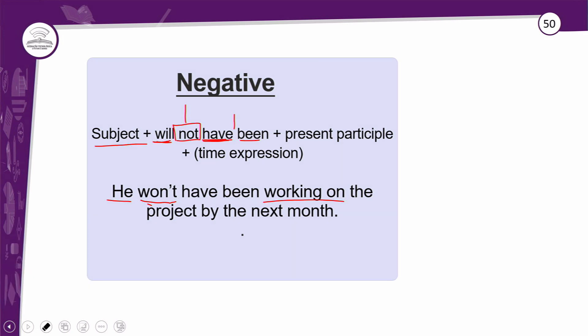Duration — duração. O Future Perfect Continuous irá descrever a duração de uma ação que começou no passado e espera-se que continue até um ponto no futuro. Então, o foco é na duração dessa ação que começou no passado e espera-se que continue até um ponto no futuro. Referencial de tempo: irá indicar um momento no futuro quando uma determinada ação terá sido completada. As expressões de tempo marcam que tal situação estará em andamento até um ponto no futuro.